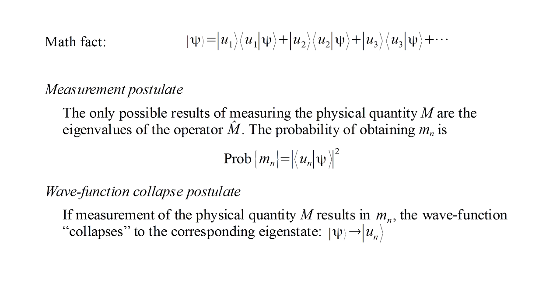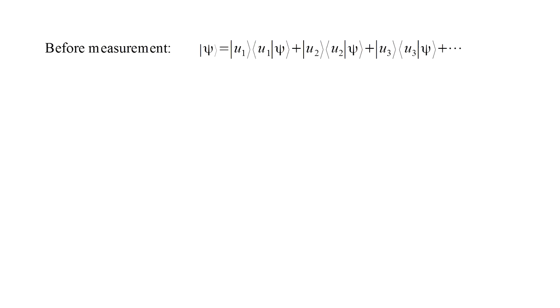What we might call the wave function collapse postulate says that if we measure the value m sub n, then the wave function collapses to the corresponding eigenstate u sub n. If before the measurement the wave function is a superposition of the eigenstates, then after the measurement the wave function is reduced to one specific eigenstate, the one corresponding to the measured eigenvalue.